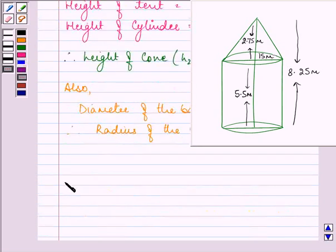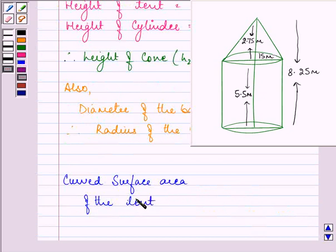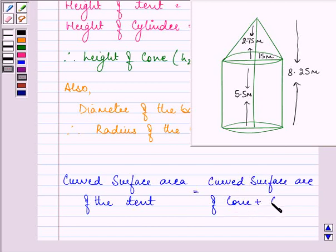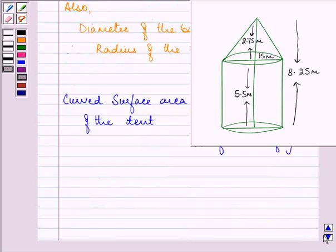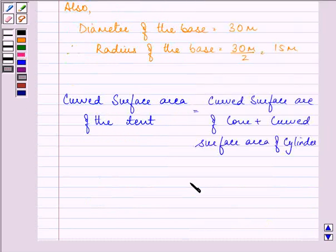Now we are finding the curved surface area of the tent. That is equal to curved surface area of the cone plus the curved surface area of the cylinder. The curved surface area of the cone is πRL, where L is the slant height, plus curved surface area of the cylinder is 2πRH. So we need to find out the slant height of the cone first.